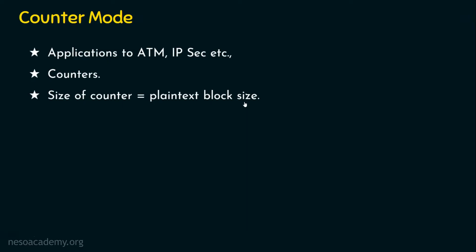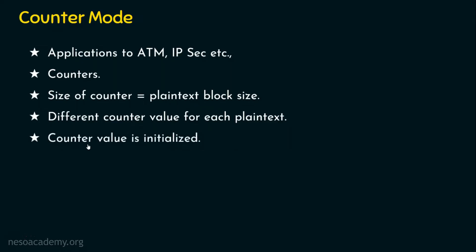Since an XOR operation is going to be carried out, the plaintext size and the counter size must be the same. Are we going to feed the same counter to all the plaintext blocks? No. For different plaintext blocks, we will have different counters. The counter value is initialized for the first block and then incremented for subsequent blocks. Since the counter value is different, we will have different ciphertext — even if two plaintext blocks have the same data.